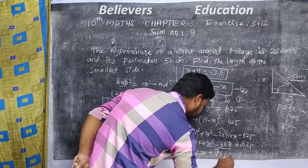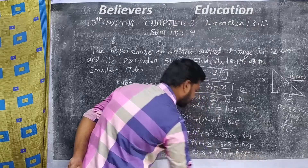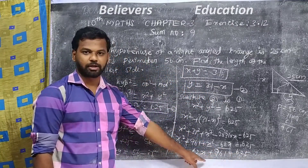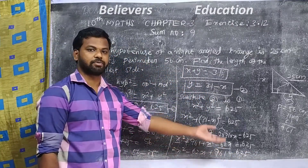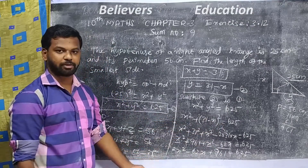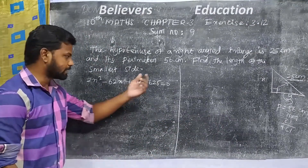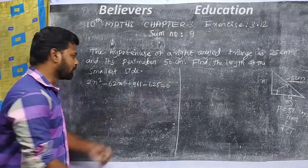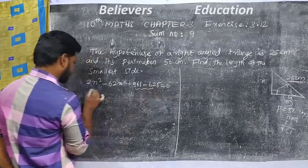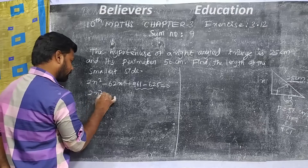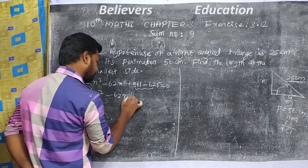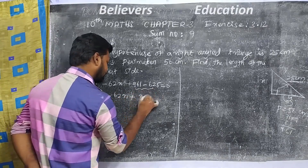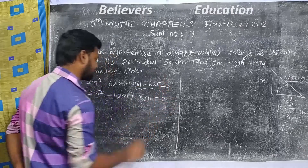So we have 961 plus x squared minus 62x equals 625. Rearranging, 2x squared minus 62x plus 961 minus 625 equals 0, giving us x squared minus 62x plus 336 equals 0. Simplifying further gives us x squared minus 61x plus 168 equals 0.